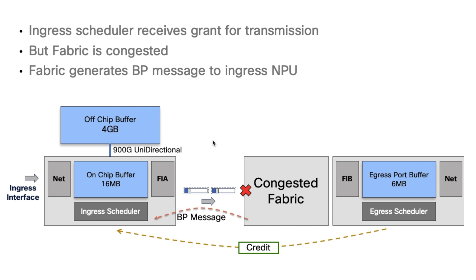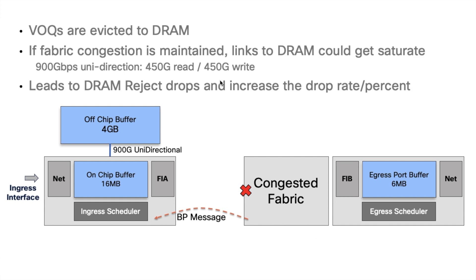The back pressure causes the NPU to evict the particular VOQ to the DRAM. Since all the generated traffic is pushed to DRAM, we eventually saturate the links to this external buffer — and that is the IDRDRAM pressure we are seeing. I want to insist that we are providing all these details to explain what can be seen in a lab. In no manner does it represent a realistic scenario, simply because you cannot get more than 90% of this particular packet size on all ports of the NPU at the exact same moment.